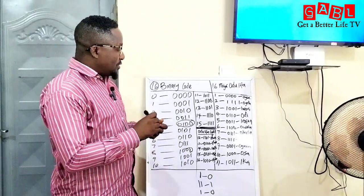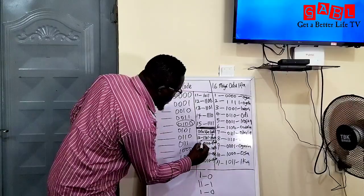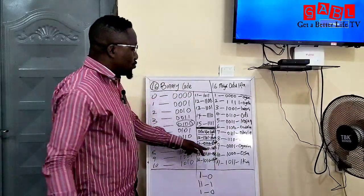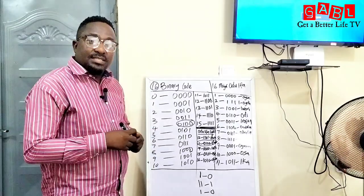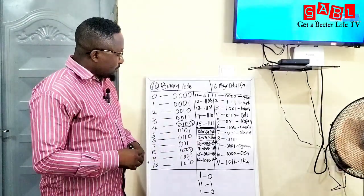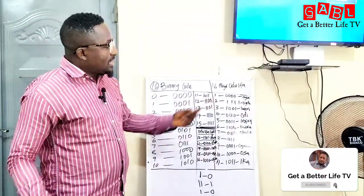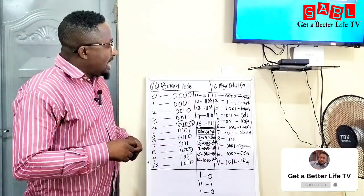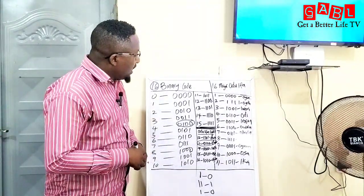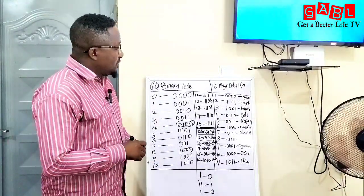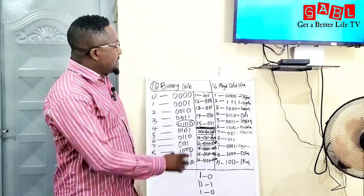You can find it here as Otura Otura. Otura Otura is on the 13th position of our 16 major Odu Ifa. So as you can see, we should not allow our heritage to be downgraded, because we already have what can be used to better our lives.